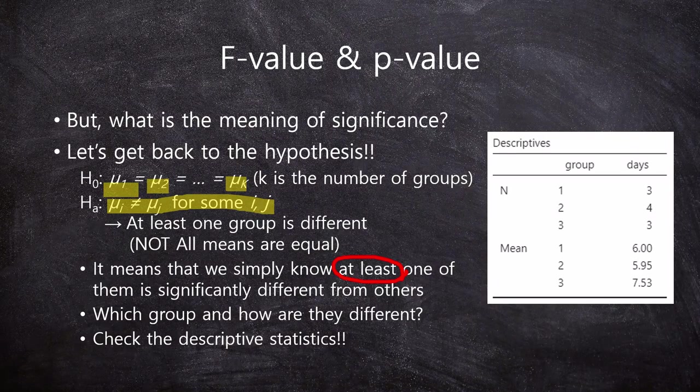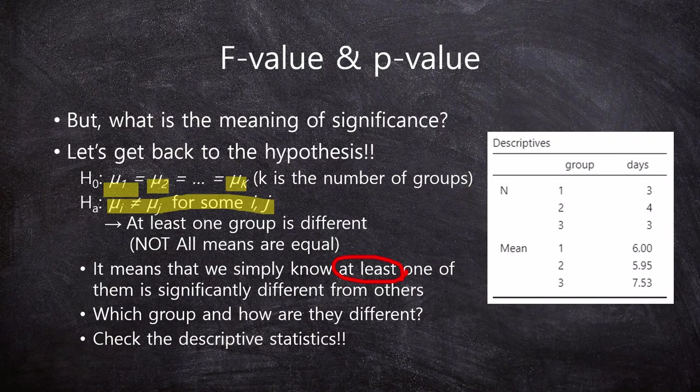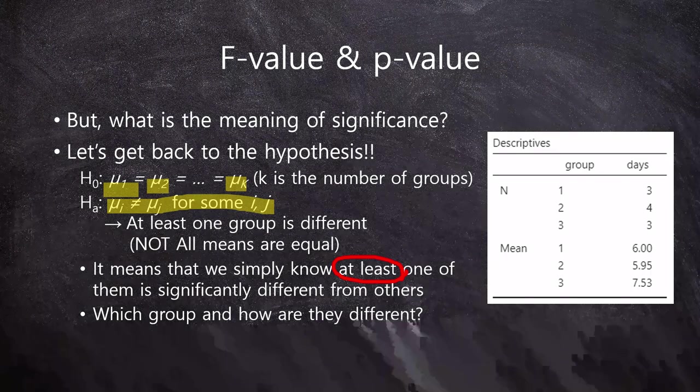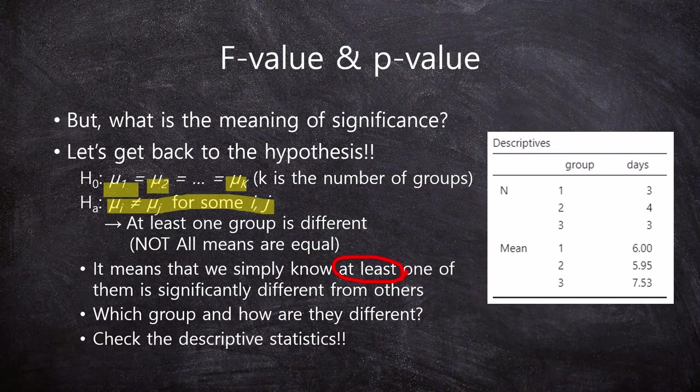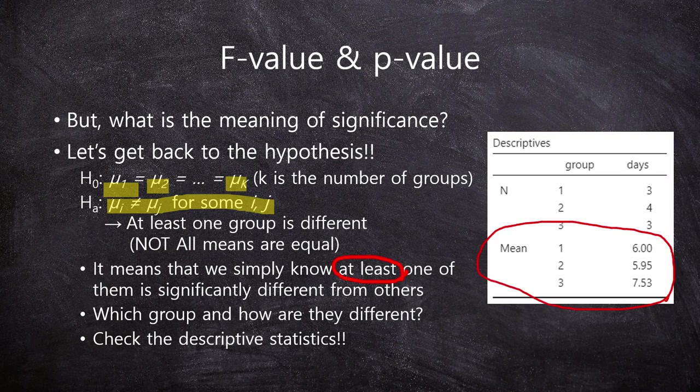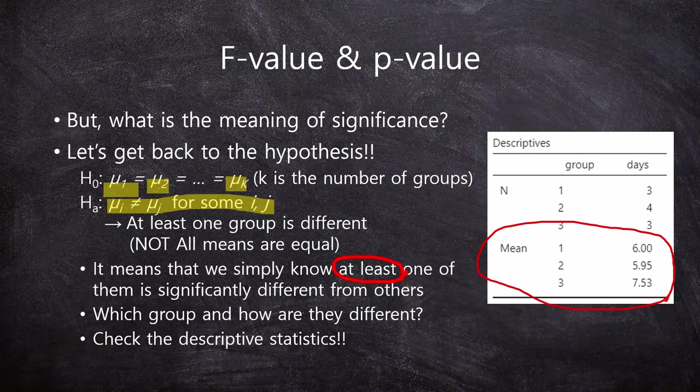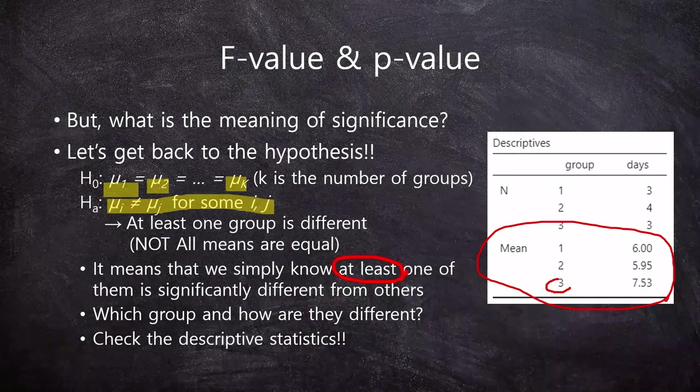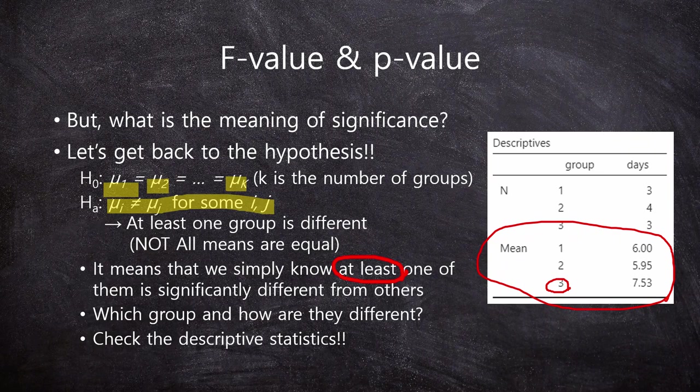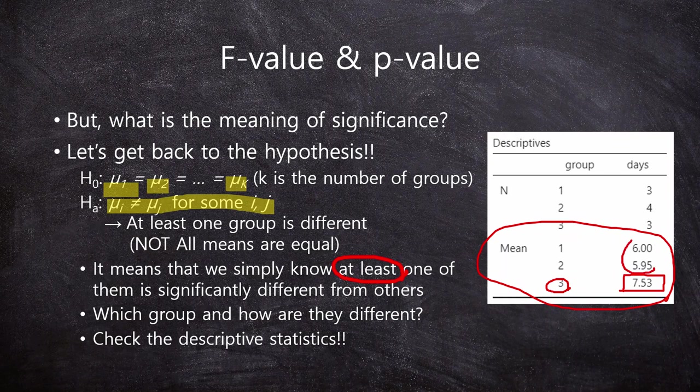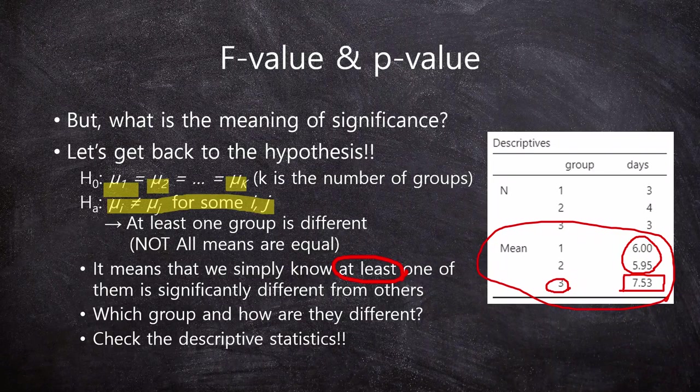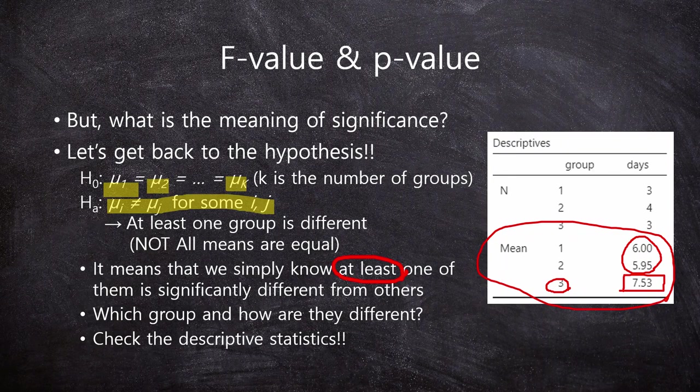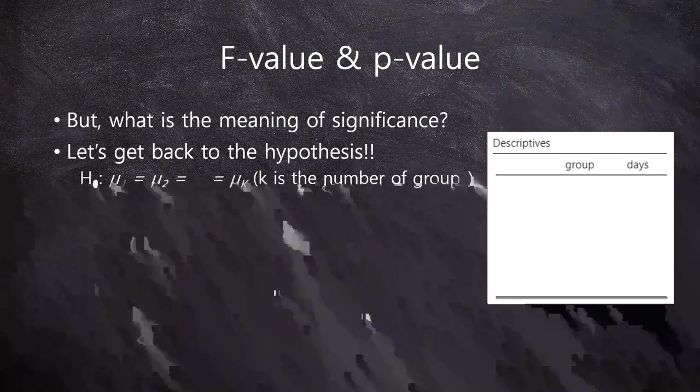So from the result of ANOVA F-value, we just know that we simply know at least one of three groups is significantly different from others. But which group, and how are they different? We don't know. Let's check the descriptive statistics. These are the mean values of three groups: first one is medication A, second is maybe medication B, final one is placebo. As you can see here, the placebo group's mean value is higher than the first two. But this is just our guess. It is not a statistical test.